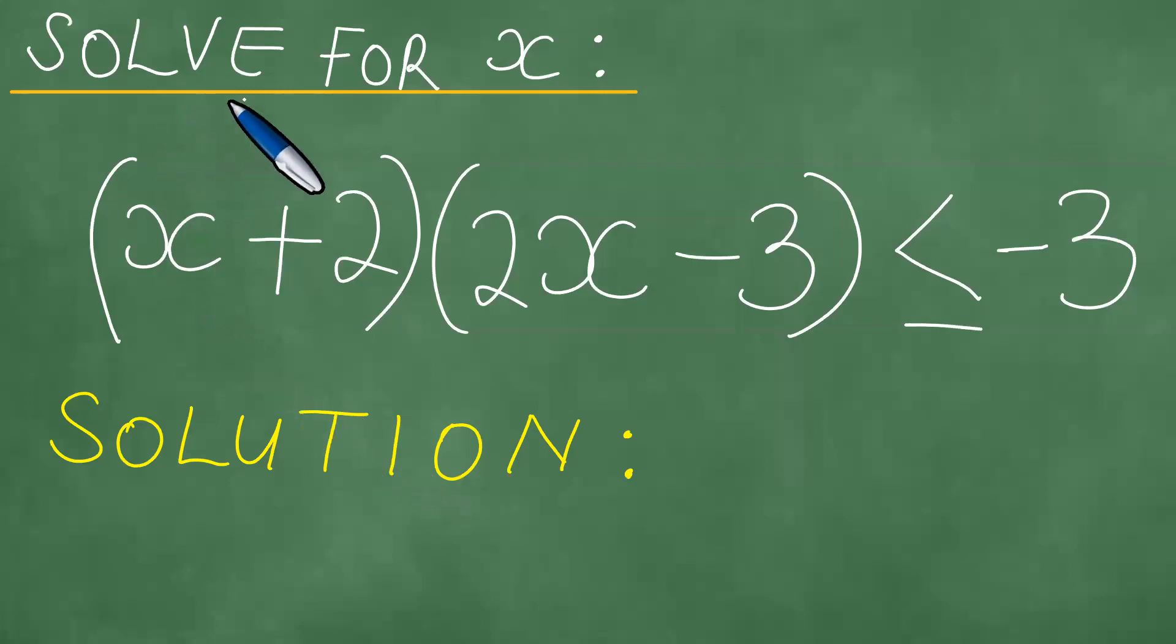We need to solve for x given (x+2)(2x-3) is less than or equal to -3. We have this quadratic inequality to solve for x. Let's proceed and present the solution to this problem in a step-by-step manner.